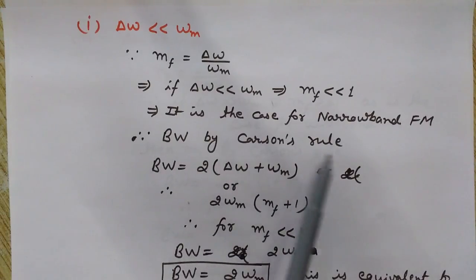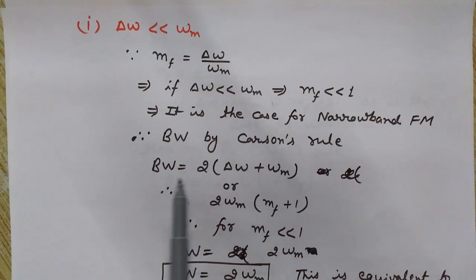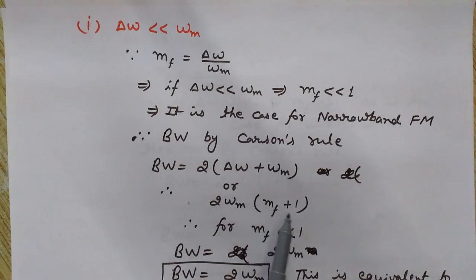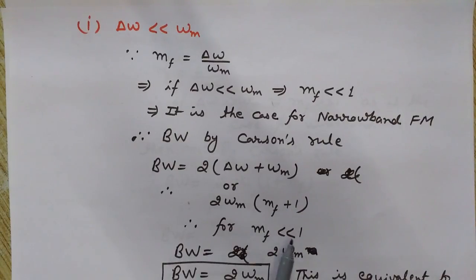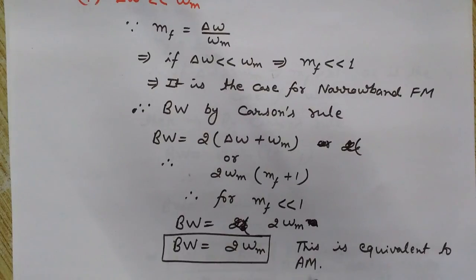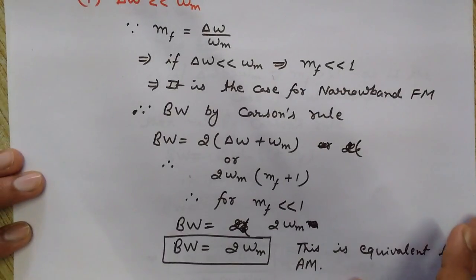For narrowband FM, the bandwidth by Carson's rule is given by 2 × (ΔΩ + ΩM), or equivalently 2 × ΩM × (MF + 1). Since MF is much less than one, we can neglect MF in comparison to one, so the bandwidth reduces to 2 × ΩM. This is equivalent to AM, because in amplitude modulation the bandwidth is also given by twice the highest frequency in the modulating signal.